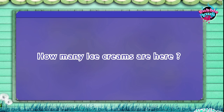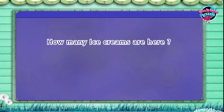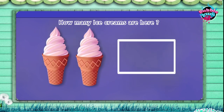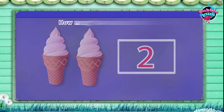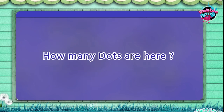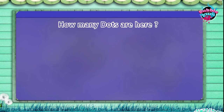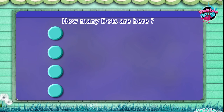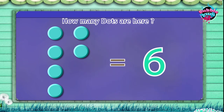How many ice creams are here? One, two. How many dots are here? One, two, three, four, five, six. Six.